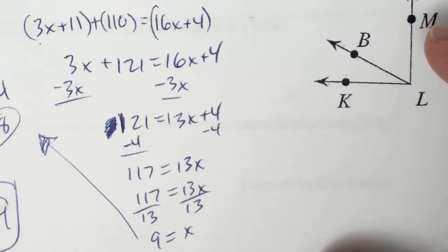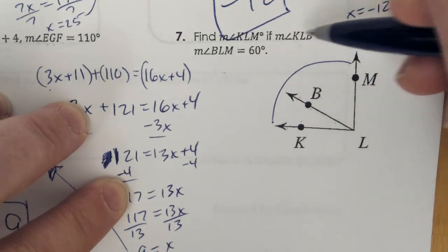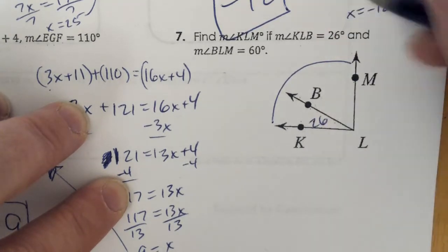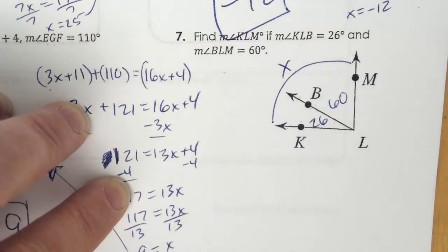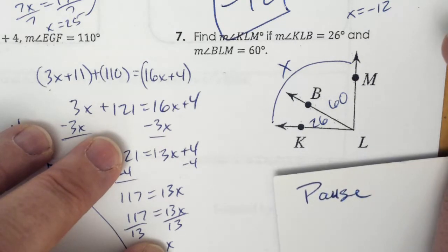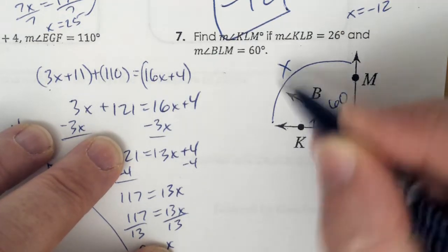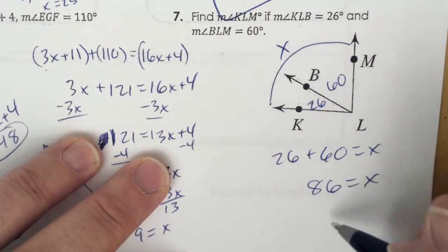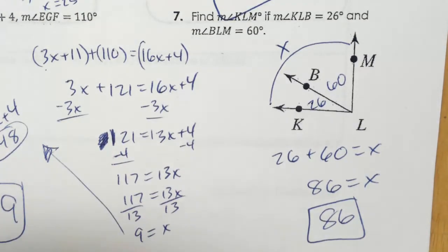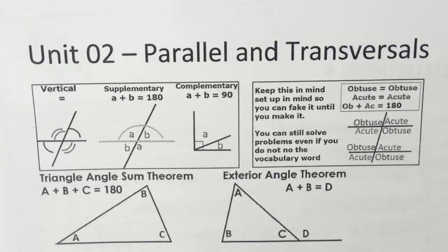Last one. Angle KLM is the whole shebang — that's what we're looking for. Angle KLB is 26 and angle BLM is 60. So 26 plus 60 equals X, giving X equals 86. They wanted the whole shebang, so 86 is your answer. That's enough for one day — there are more notes and practice in the next video. Thank you for working really hard and hope you guys have a wonderful day.